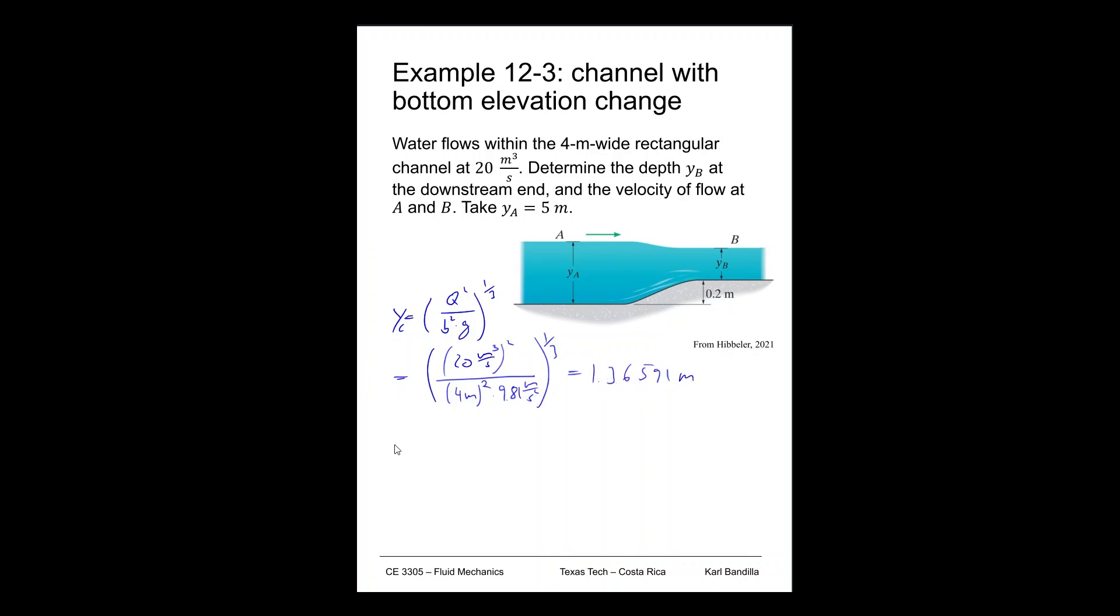At A we get 5 meters, so yA is greater than yc, which means we have subcritical flow. If you have difficulties remembering which is subcritical and which is supercritical, the deeper the water is, the slower it's going to flow. So if it's very slow, that means it's going to be subcritical. In our case, it's relatively deep compared to what the critical depth is, that means it's going to be subcritical.